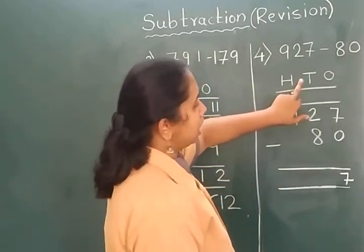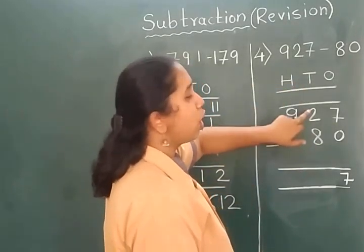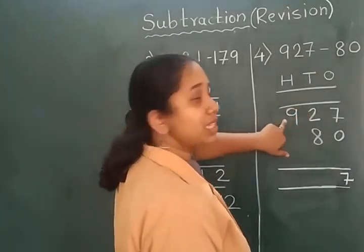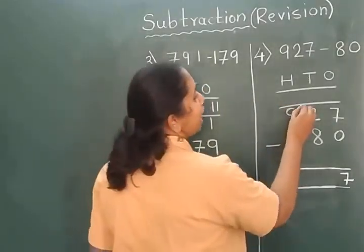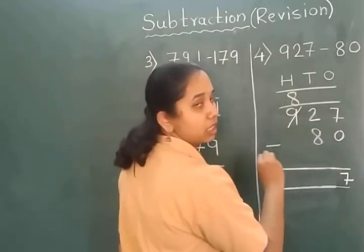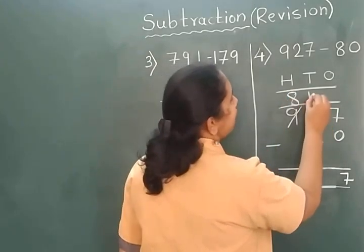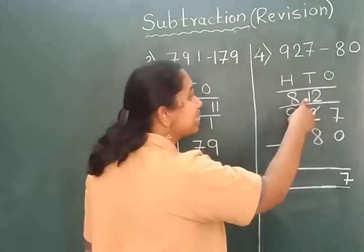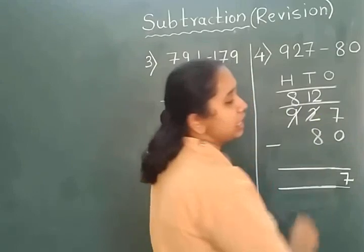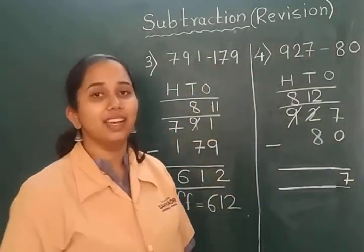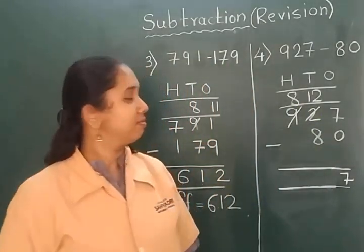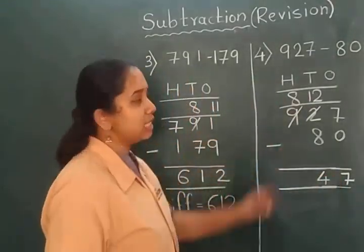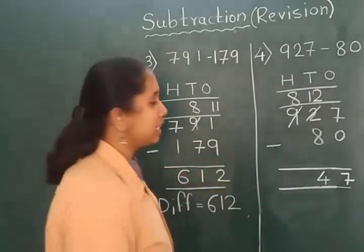Now just focus on ten's place. We cannot subtract 8 from 2, so we have to borrow number from this 9. So this 9 will become 8, and this 2 will become 12. Here 1 is the borrowed part. So 12 minus 8, answer is 4.